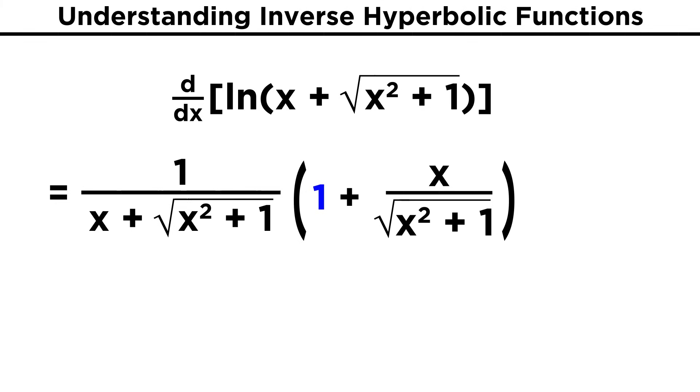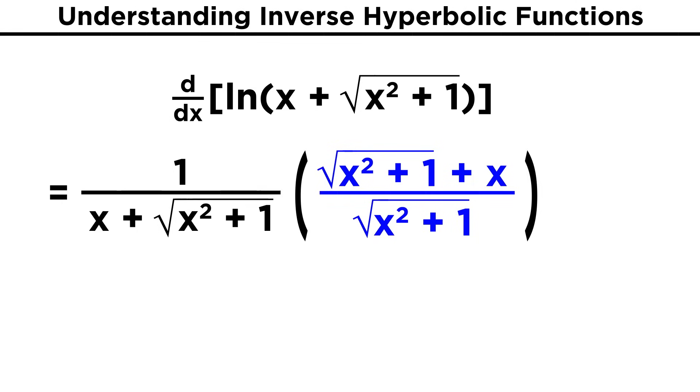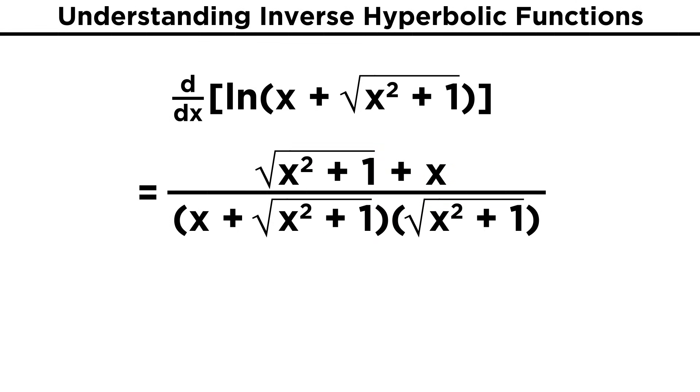Now we just change the number one to get a common denominator, so that we can combine the two terms in the parenthetical, and then we can combine these two larger terms. We find that this more complicated term will simply cancel out, and this is what we are left with.